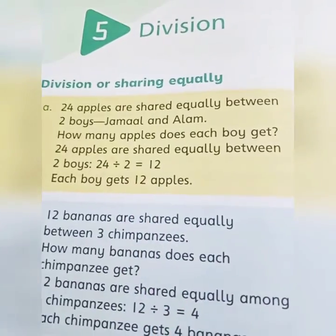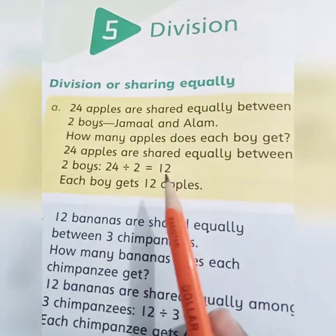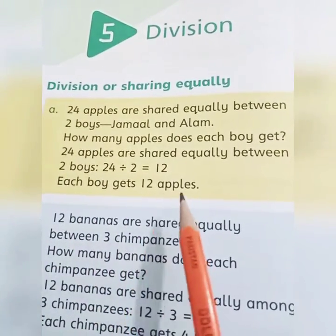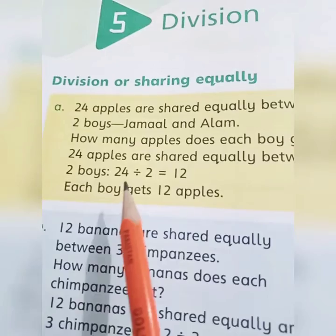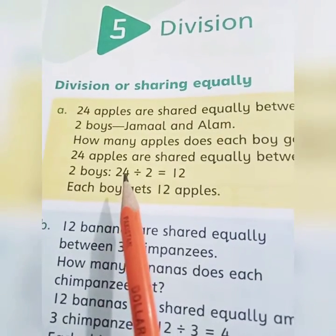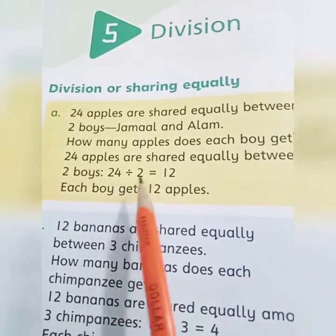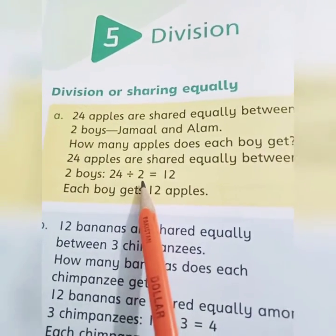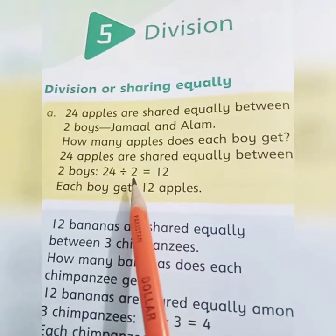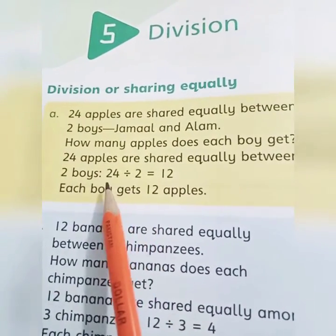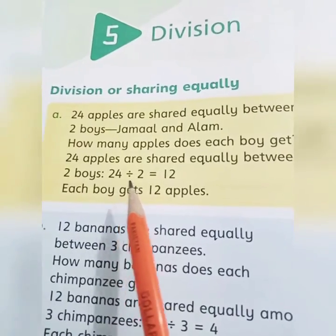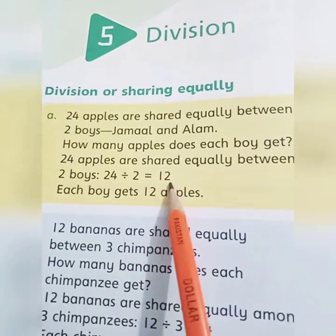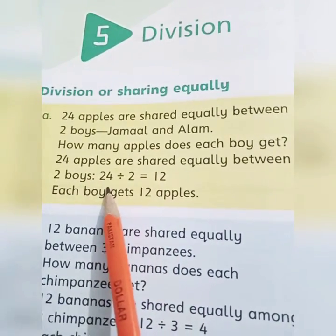Among how many children? Two children. So the answer is 12. Each boy gets 12 apples. How did we get 12? We look at which is the smaller number — 24 or 2. 2 is the smaller number. Now we will read the table of 2 until we reach 24.